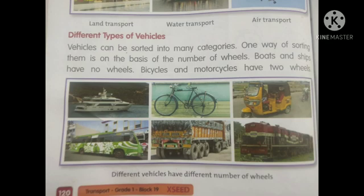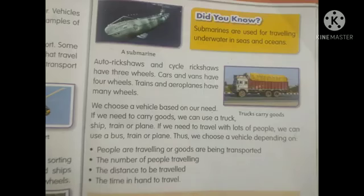Different types of vehicles. Vehicles can be sorted into many categories. One way of sorting them is on the basis of the number of wheels. Boats and ships have no wheels. Bicycles and motorcycles have two wheels. Auto rickshaws and cycle rickshaws have three wheels. Cars and vans have four wheels. Trains and airplanes have many wheels.